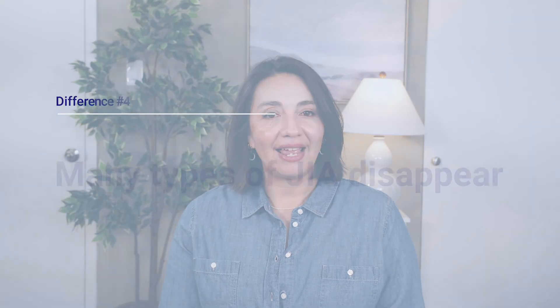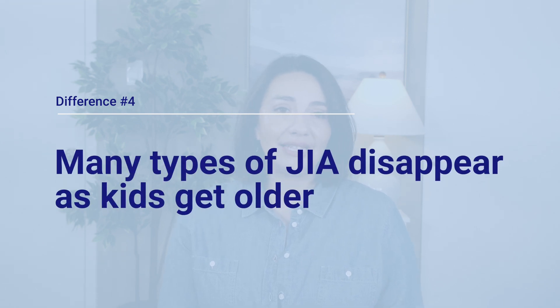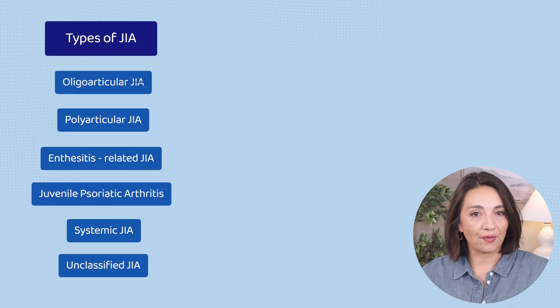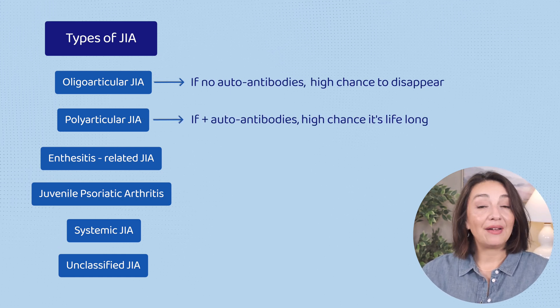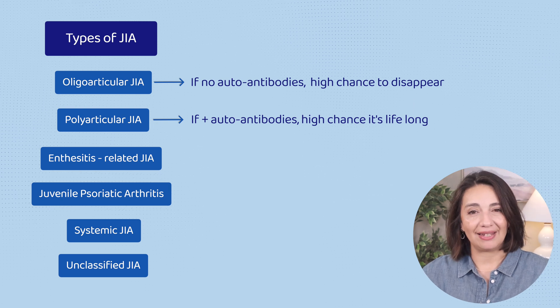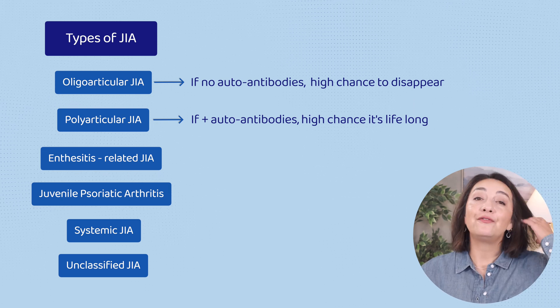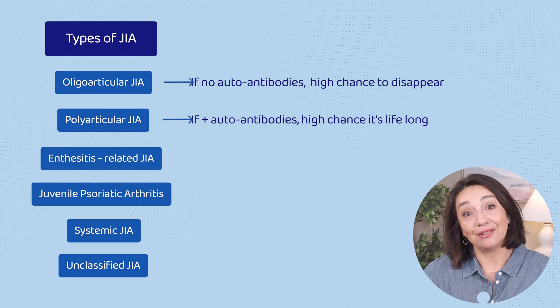How we think about treatment also differs. Treatment in RA — and really any autoimmune condition — follows a strategy based on the fact that RA is not curable; it's assumed the person will need treatment for the majority of their life. In JIA, treatment decisions are more nuanced because in many types the disease may go away as the kid gets older — they grow out of it. This is most likely to happen in those with oligoarticular JIA who don't have any positive autoantibody tests.